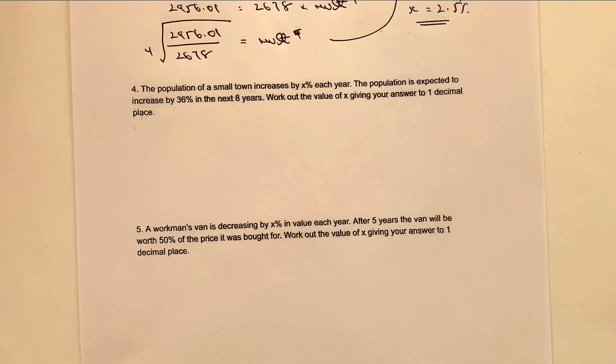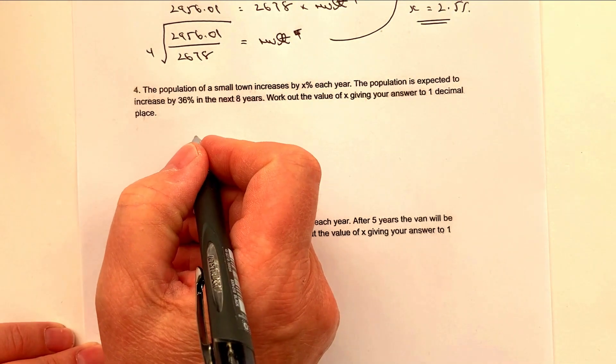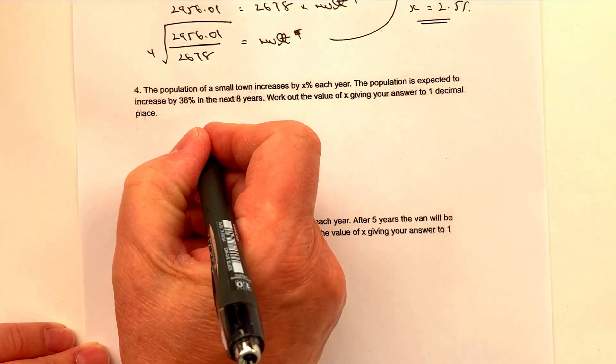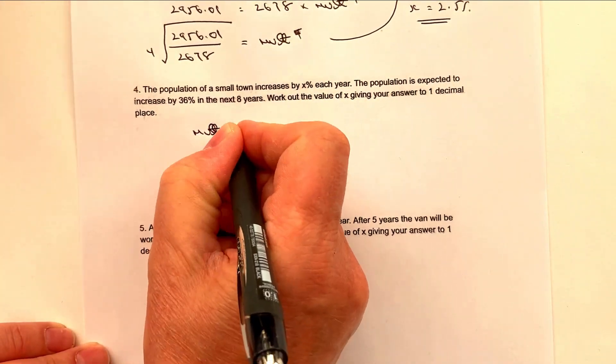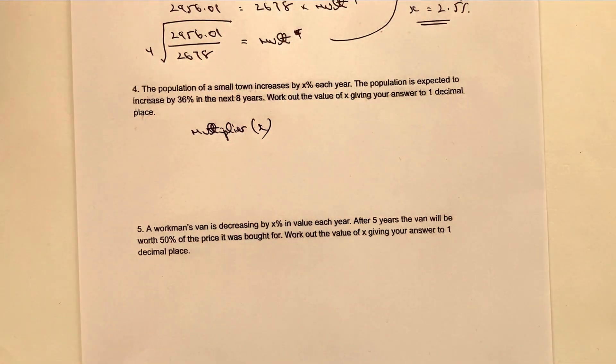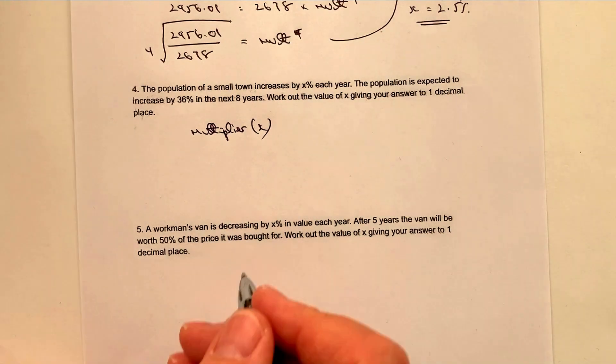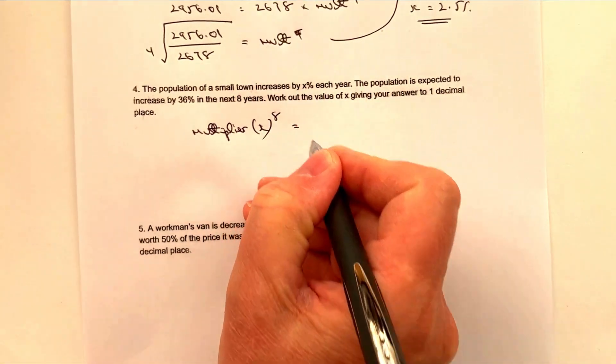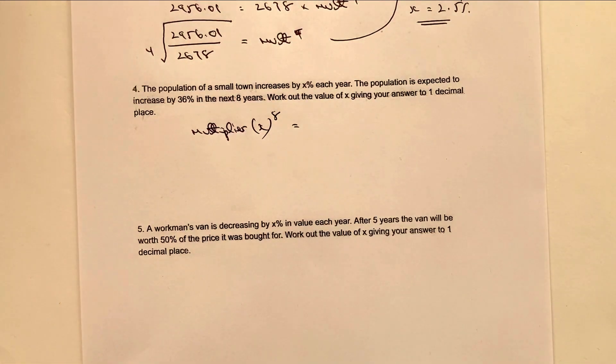So it says a population of small town increases by X percent each year. The population is expected to increase by 36 percent in the next eight years. Well, basically what that means is that if you look at the previous formula, the multiplier, which in this case we're going to call X - remember X is the percentage that we're looking for - to the value of eight years is going to be equal to a 36 percent increase.